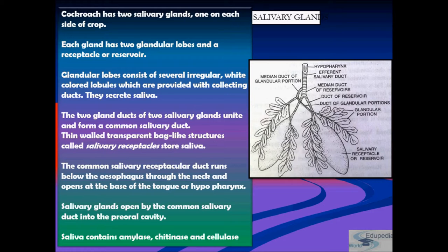Each salivary gland has two glandular lobes and a receptacle or reservoir. The glandular lobes consist of several irregular white-colored lobules with collecting ducts that secrete saliva. The two gland ducts of each salivary gland unite to form a common salivary duct, which opens into the preoral cavity. Saliva contains amylase, chitinase, and cellulase to aid digestion. The salivary receptacles are thin-walled transparent bag-like structures that store saliva.